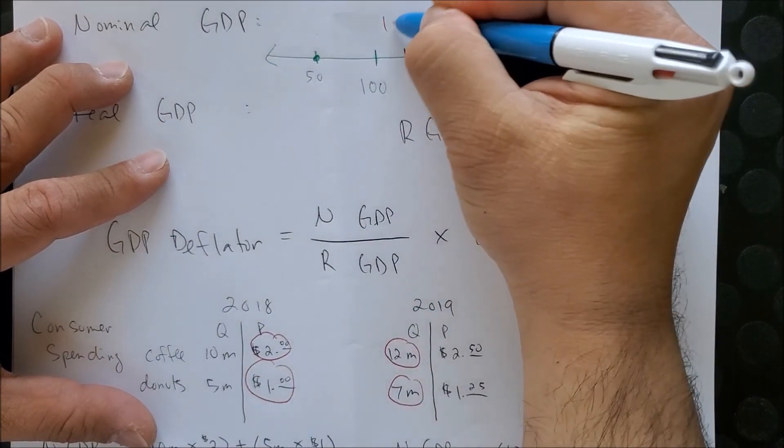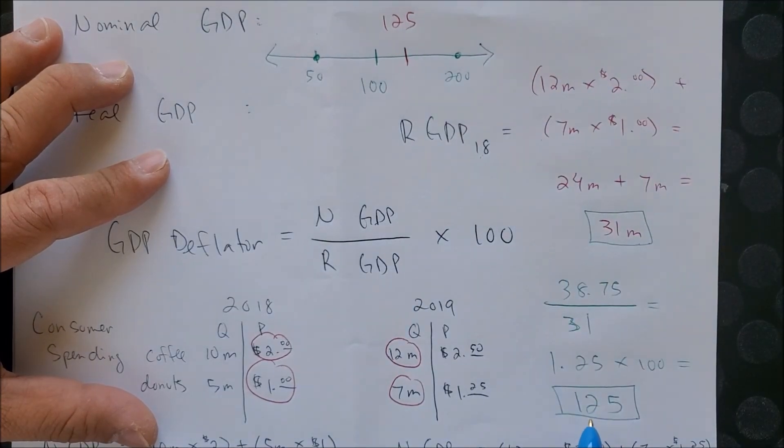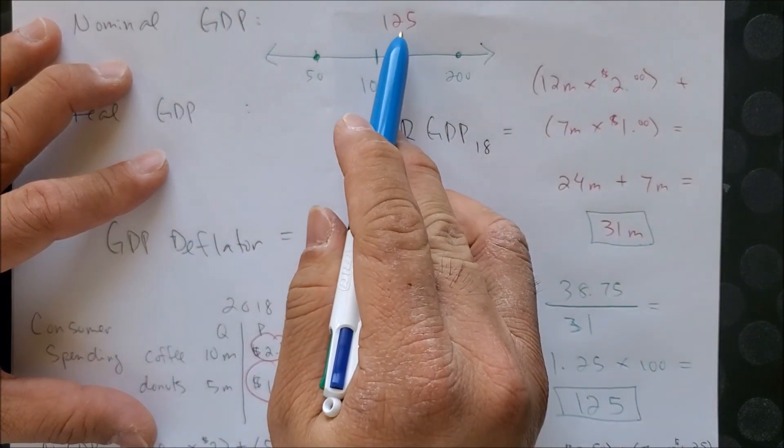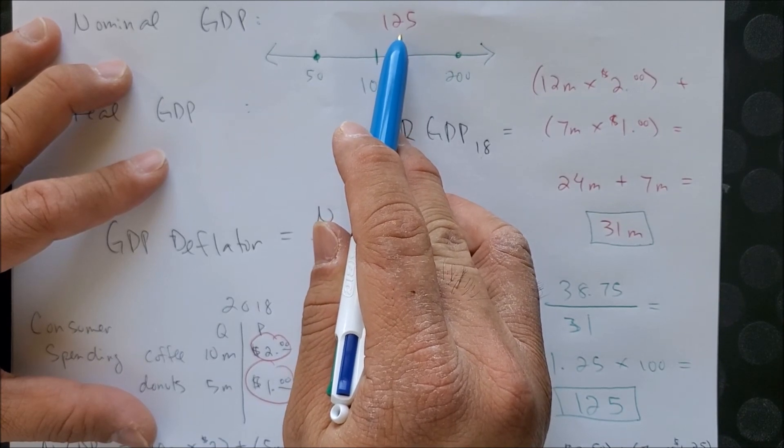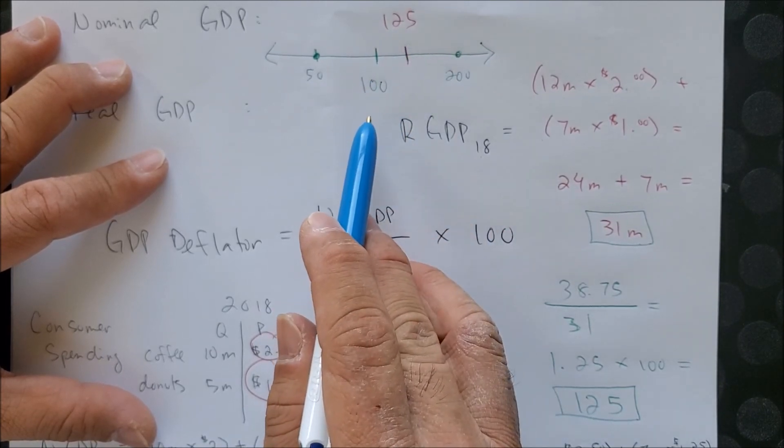This means that the economy, its price level, its growth is 25% more than it was last year.